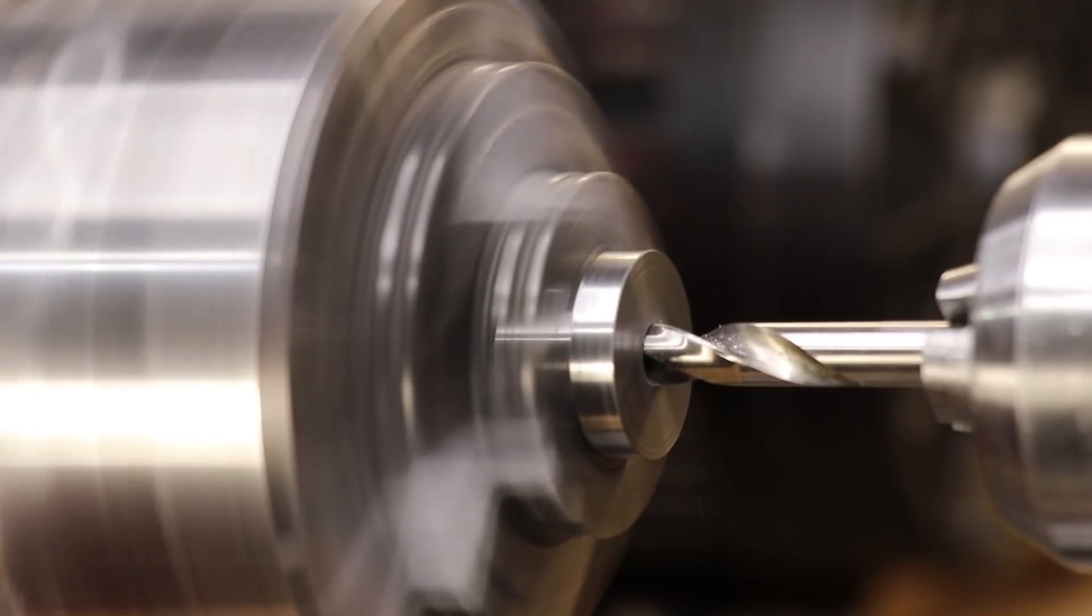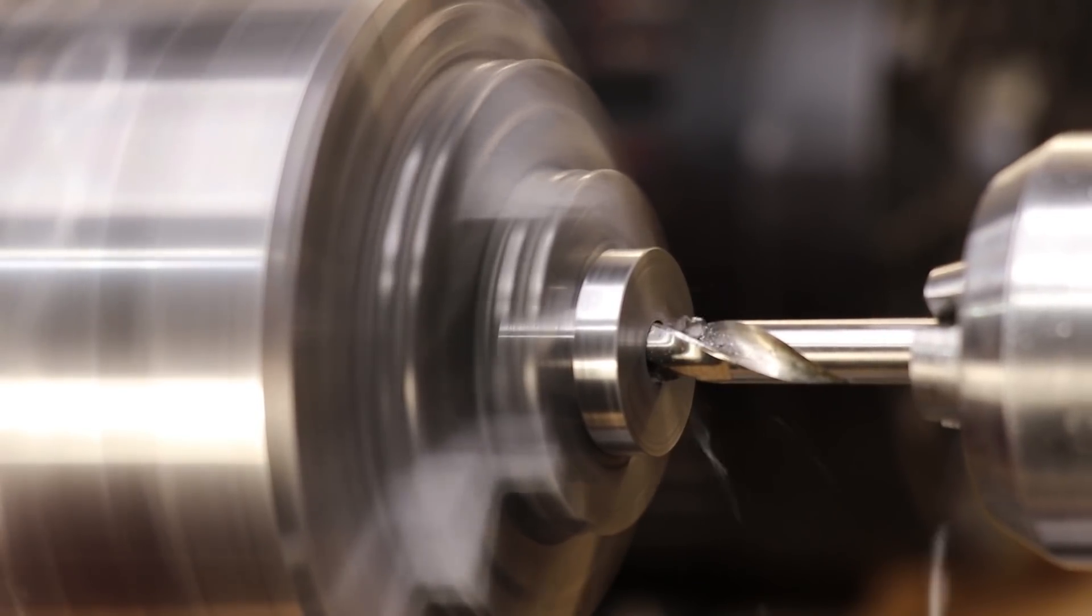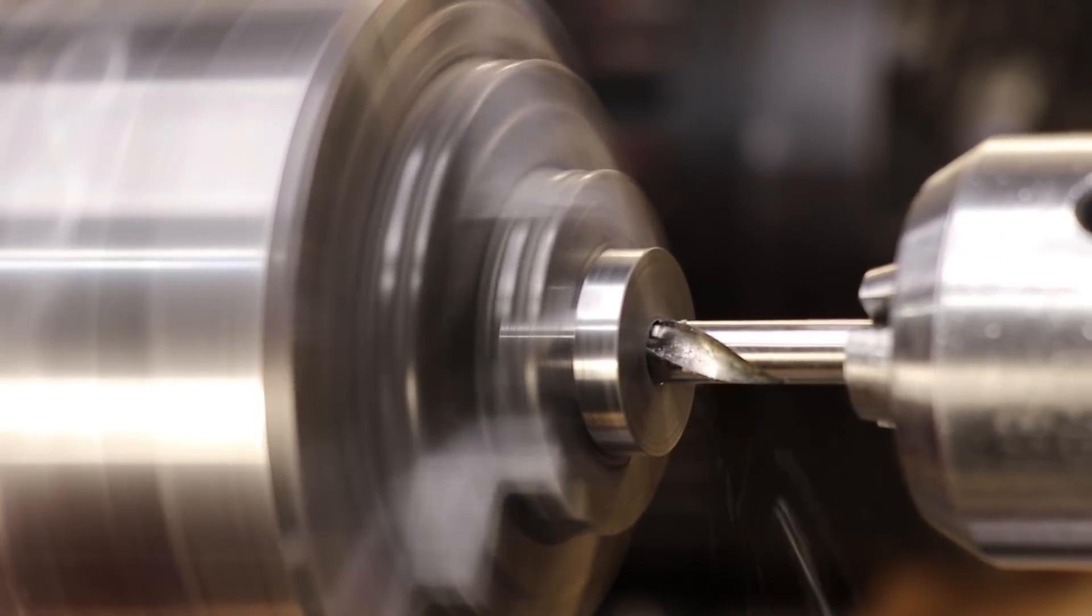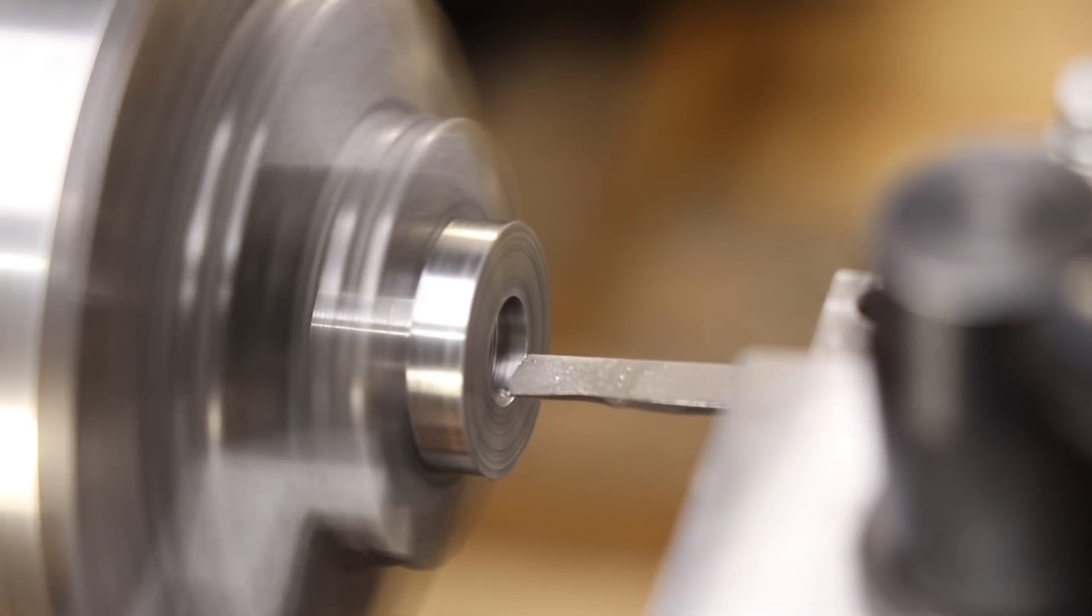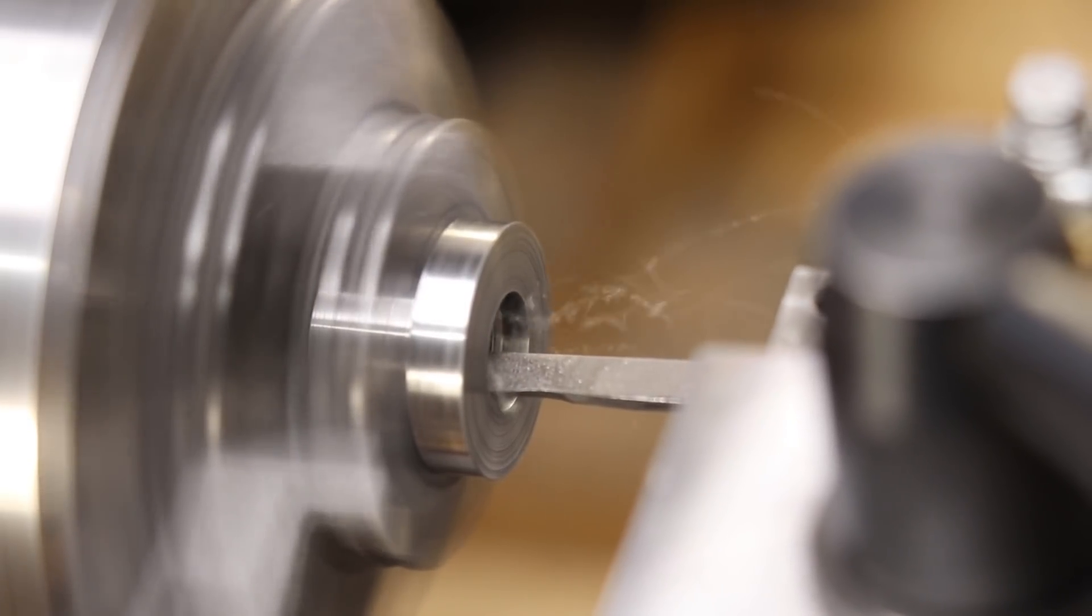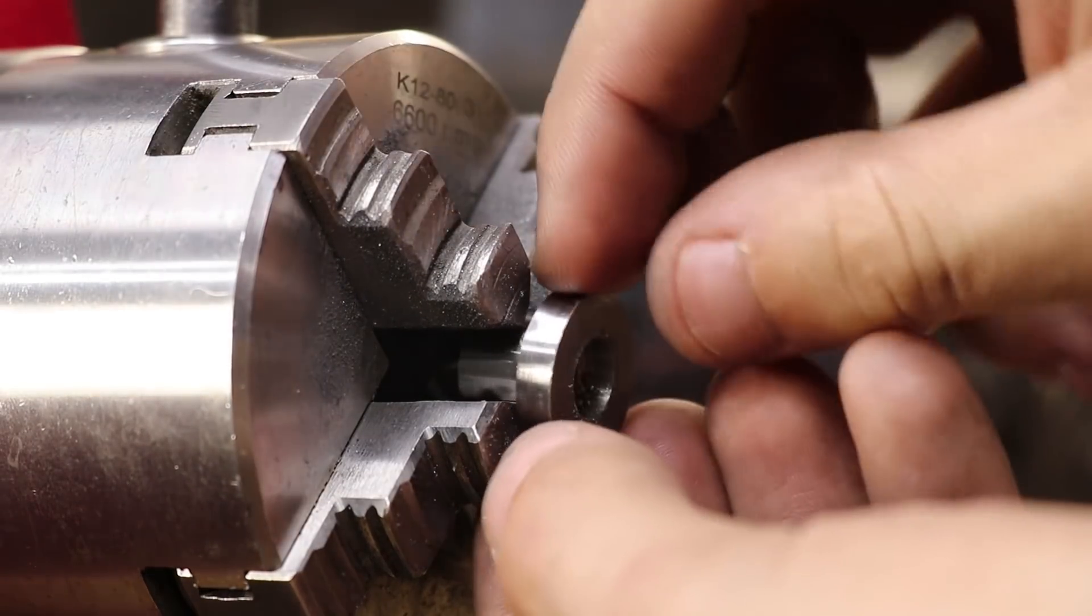Now the cap is held on to the body using an M5 cap head screw. I'll use a drill to drill through the cap and then I'll use a boring bar to make a counterbore. And that's the part done.